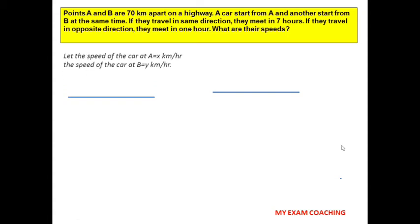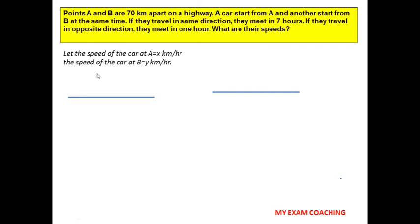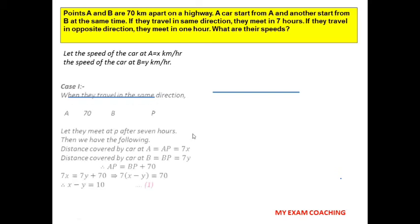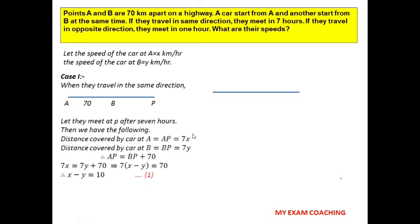To solve this, let the speed of the car at A be x km/h and the speed of the car at B be y km/h. Now let us apply the given conditions. In case 1, they travel in the same direction and meet in 7 hours.